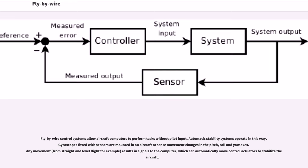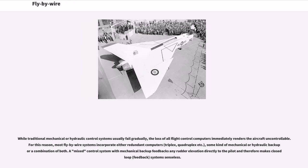Fly-by-wire control systems allow aircraft computers to perform tasks without pilot input. Automatic stability systems operate in this way. Gyroscopes fitted with sensors are mounted in an aircraft to sense movement changes in the pitch, roll and yaw axes. Any movement from straight and level flight, for example, results in signals to the computer, which can automatically move control actuators to stabilize the aircraft.